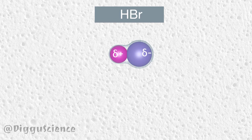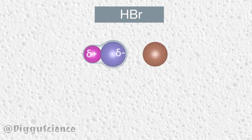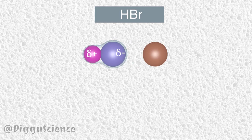Let's say that around this molecule there are argon atoms. Argon is a noble gas — an atom that is stable in its atomic form. So the argon atom has no polarity.